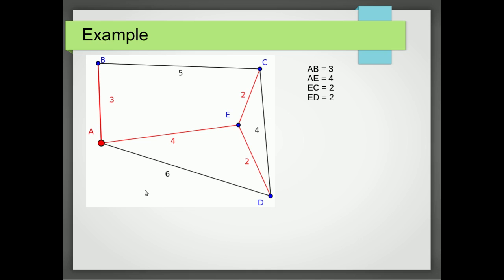So now what's the shortest path connected to A, B, E, C or D? Well it could be CD, but CD would create a loop that goes from E to C to D, so we can't use that one. What's the next one? Well that's BC, and that creates a loop A, B, C, E — so that's no good. And what about AD? Well that creates a loop between A, E and D. So we've finished.